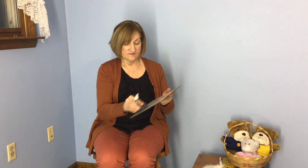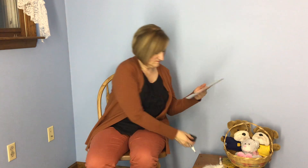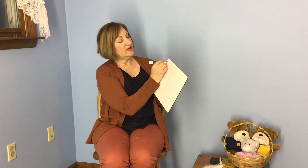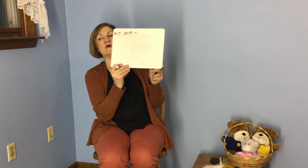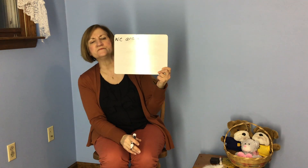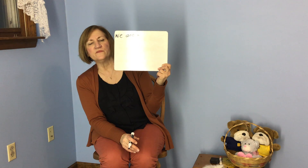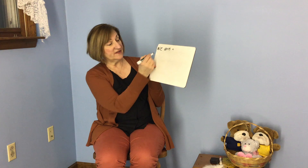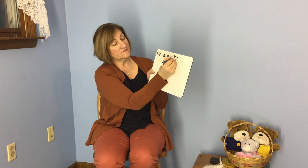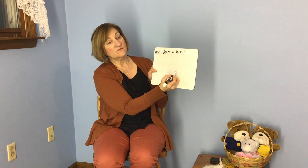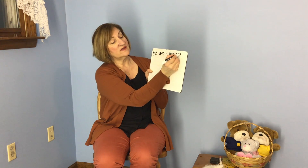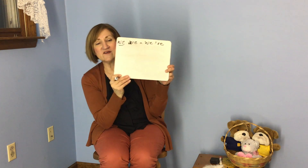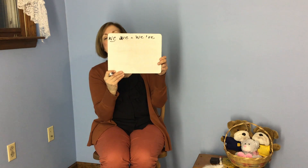Then you're going to be contraction experts. We are. Jonathan, what would the contraction for we are be? We're right! We're going to keep the we, get rid of the A, and add apostrophe-R-E. We are having a great time. We're having a great time.